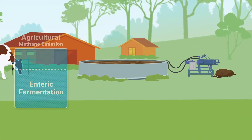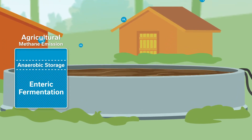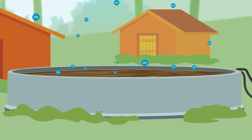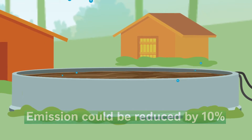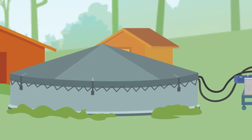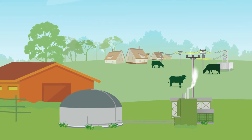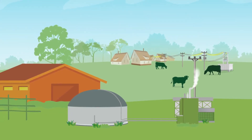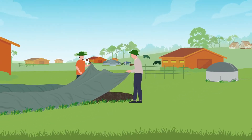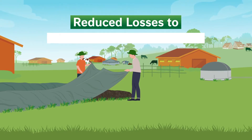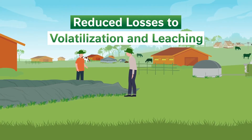A smaller proportion — about one eighth of methane emissions — comes from the storage of manure under anaerobic conditions. It is estimated those emissions could be reduced by about 10 percent through improved manure management, like covering storage, separating liquids and solids, use in anaerobic digesters where methane as biogas is captured for electricity or cooking, and composting. Many of these measures also reduce losses of nitrogen through volatilization and leaching during storage, improving fertilizer properties.